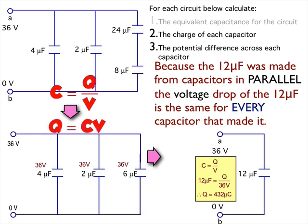Specifically, I'm going to rewrite it as Q is equal to CV and use that to calculate my charge on each one of the capacitors. So, 144 microcoulombs, 72 microcoulombs, and then 216 microcoulombs.